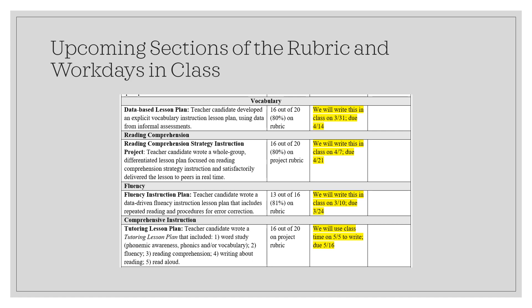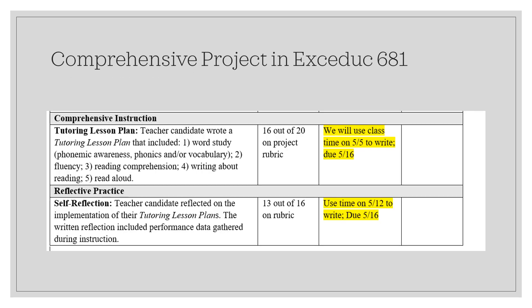The three plans on fluency is one, vocabulary is two, and comprehension is three. So you'll be able to use each of those three plans toward your tutoring lesson plan. Now there are two additional pieces, and I'll show what those are. I have the recommendation that you take what you're working on in each week of the class and compile it for this comprehensive plan.